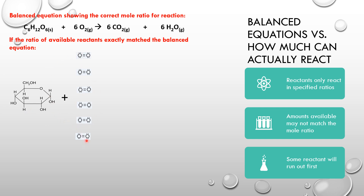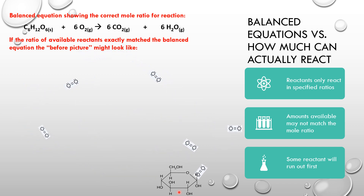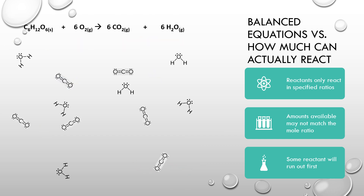Each molecule here represents one mole of the substance. In actual fact, you would expect the oxygen molecules to be in gas form, randomly arranged, and the sugar molecule to be a solid at the bottom because it's more dense. Things would be in motion — you see here we have an oxygen about to crash into a glucose molecule. That's how the reaction would happen: when the oxygen crashes into the glucose molecule.